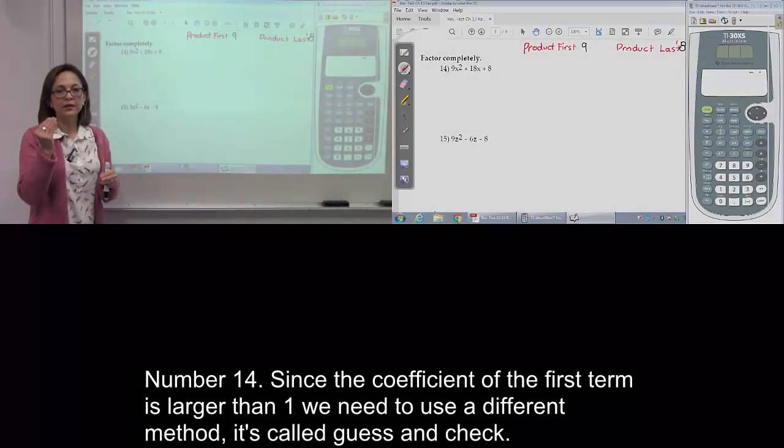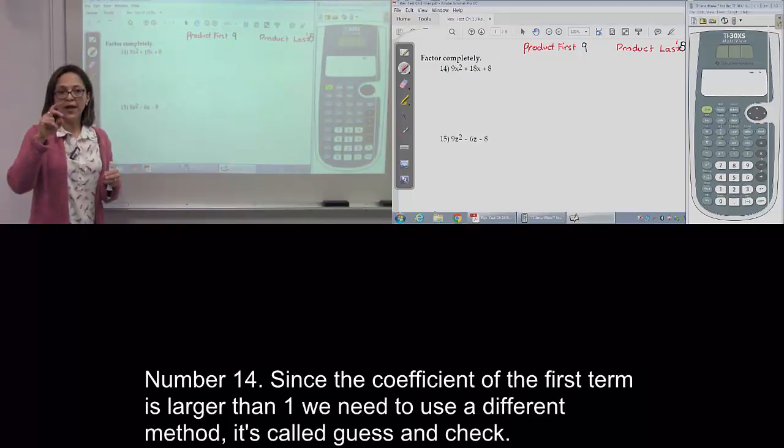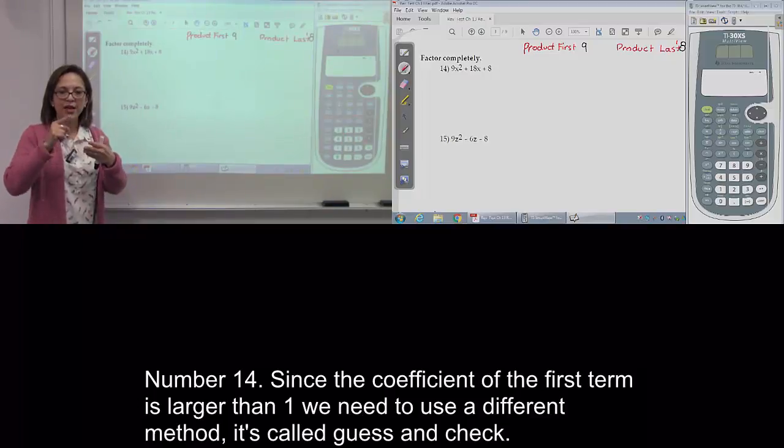Number 14. Because the coefficient of x squared is larger than 1, we have to use a different method. This is called guess and check.